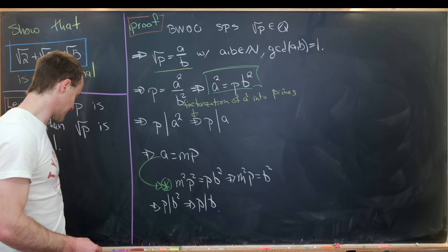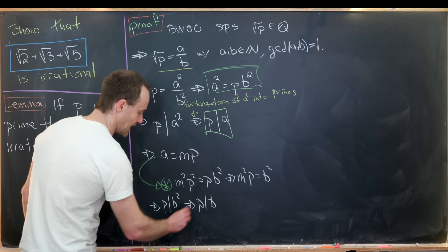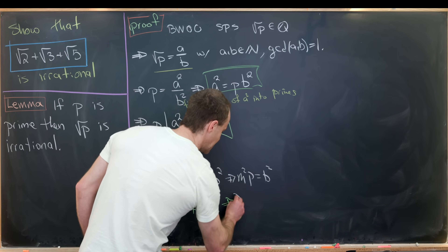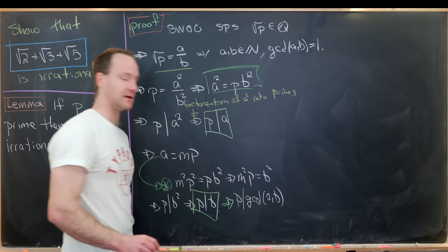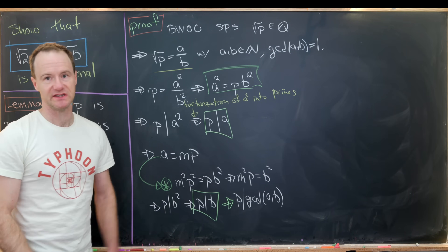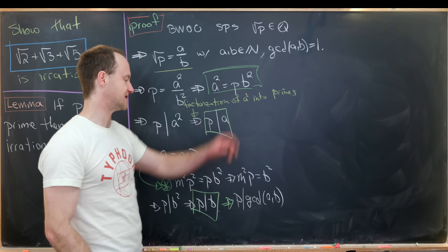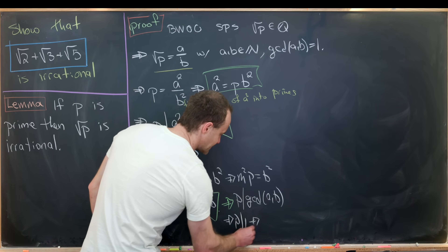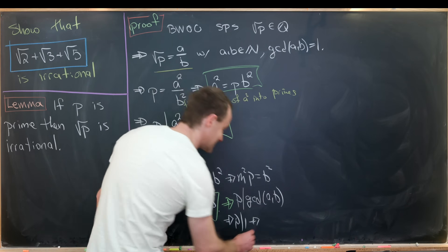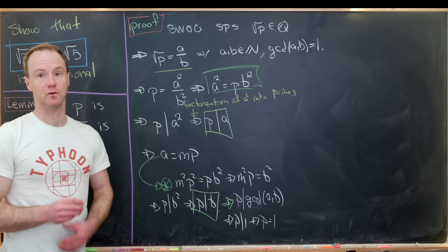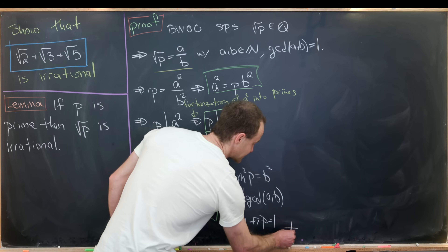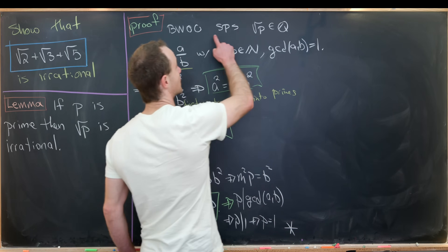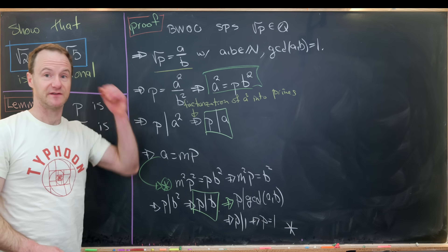Now let's put things together. We see that p divides a and p divides b. But if p divides both a and b, then p divides the GCD of a and b. But recall that the GCD is equal to 1. So that tells us that p divides the number 1. But 1 only has one positive divisor, which is itself, so that means p equals 1. But 1 is not considered a prime, so we've reached a contradiction. We contradicted our original supposition that the square root of p was rational.